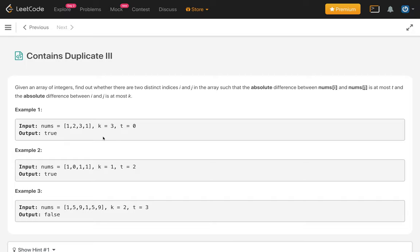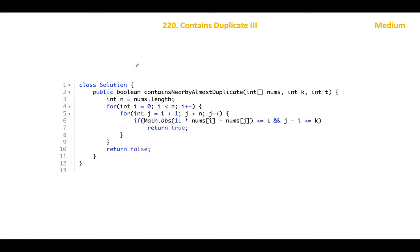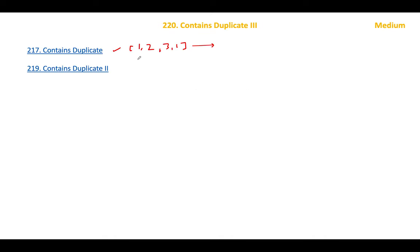How will we solve this problem? In Contains Duplicate 1, we just need to check whether there is a duplicate pair. So for this same example [1, 2, 3, 1], we return true because 1 and 1 form a duplicate pair. That can be solved using a hash set. In this problem, we need to check if there exists a duplicate pair where the index difference is at most k, so we use a hash map.